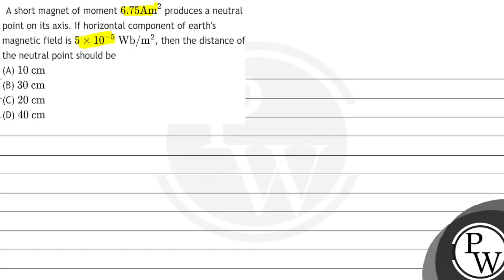Here we will find the distance from the neutral point. The concept we will use is magnetic field due to a magnet on an axial point.